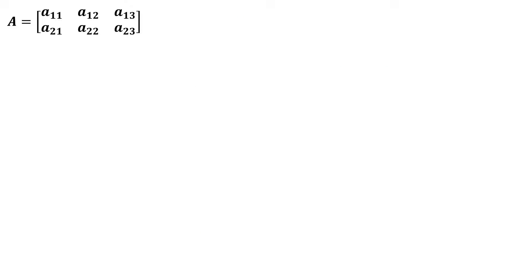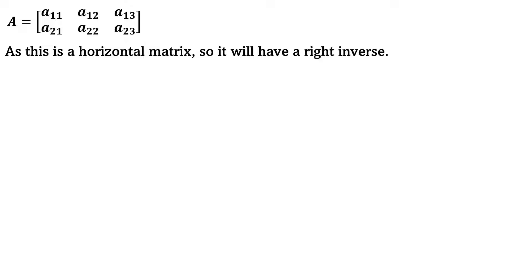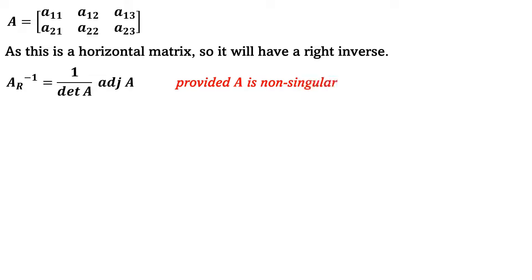In this video, we are going to evaluate the inverse of a non-square matrix of order 2×3. As this is a horizontal matrix, it will have a right inverse. Therefore, the right inverse will be equal to 1 over the determinant of A into the adjoint of A, provided A is non-singular. Note that here we use A-R-inverse instead of A-inverse, because for a horizontal matrix, A-R-inverse equals A-inverse.